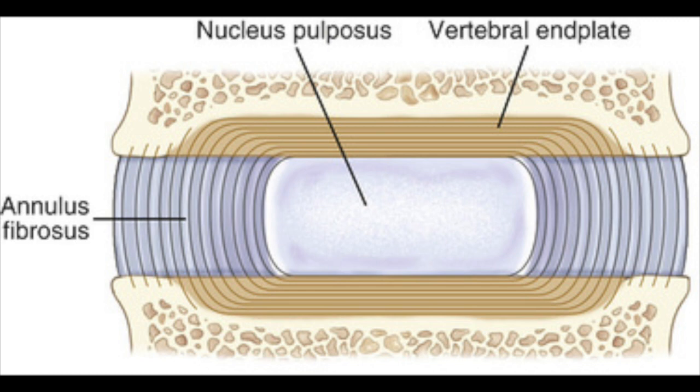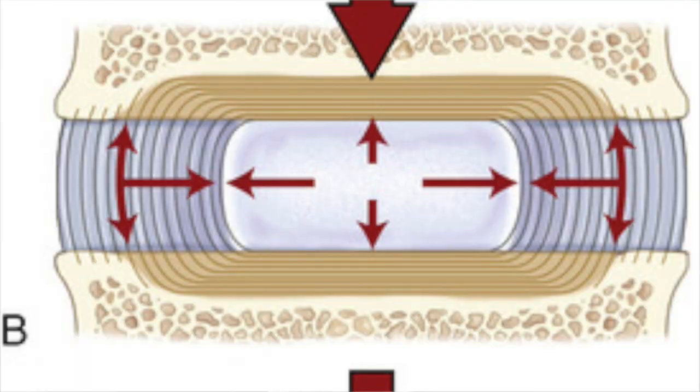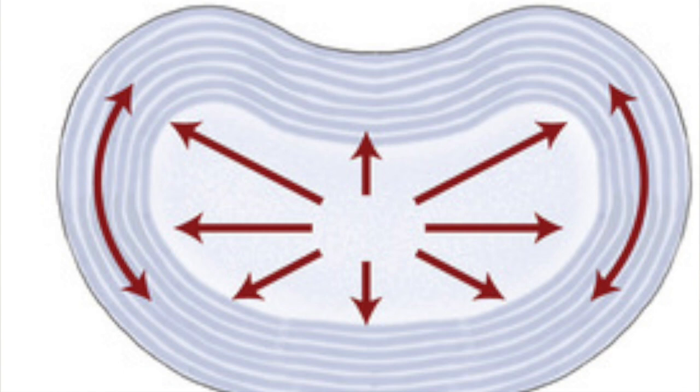That end plate is actually the absorption portion of it — it has a little bit of give to it, a little bit of spring. When pressure is exerted — 80 percent of our body weight forces go right through that disc — just standing up or sitting, forces and pressure are going through that disc. That center, more fluid component is going to exert its pressure back up and down on those end plates, and outward on that annulus fibrosis.